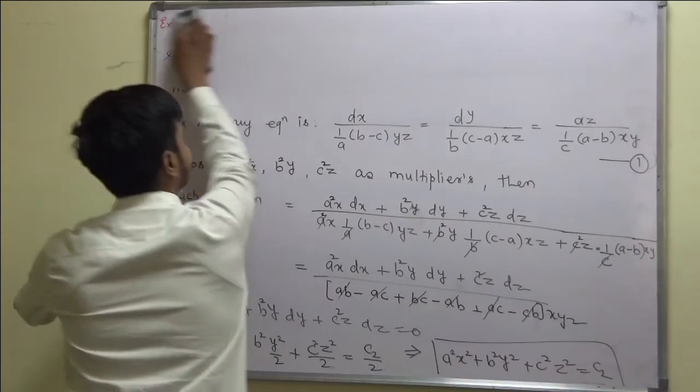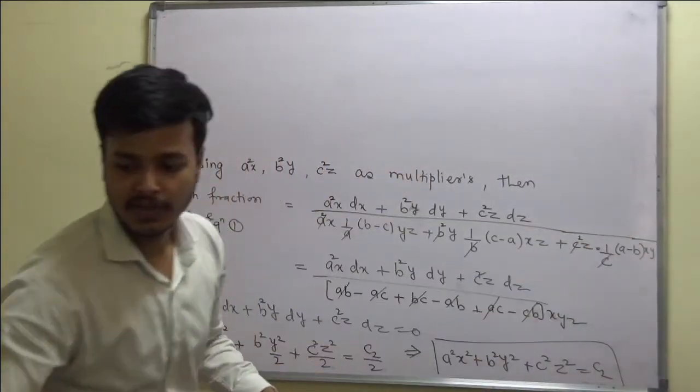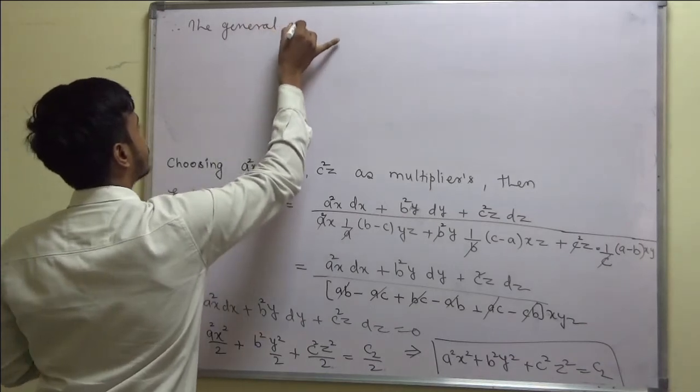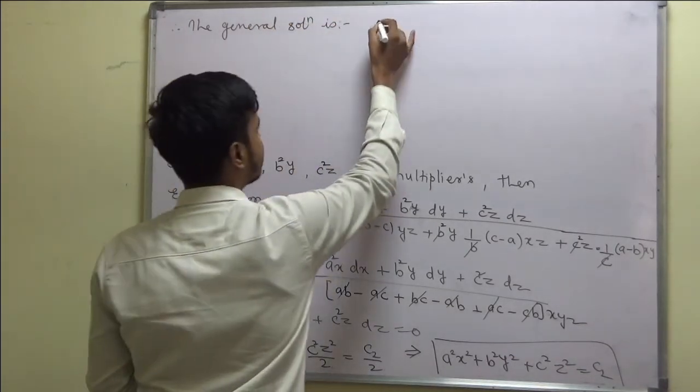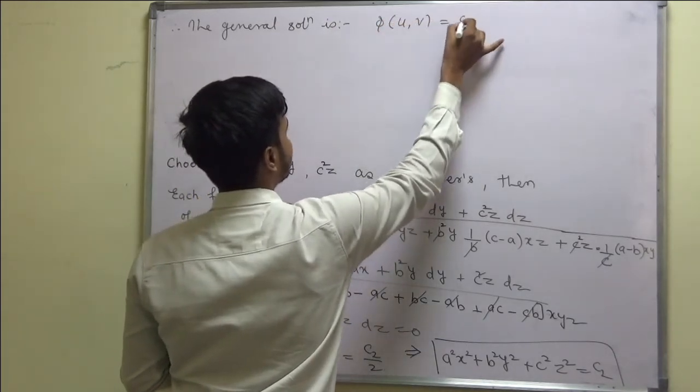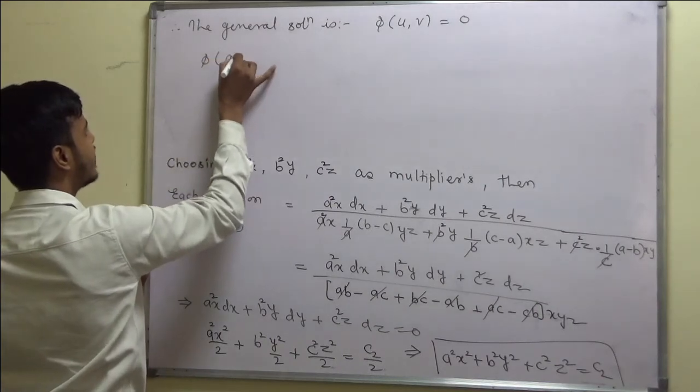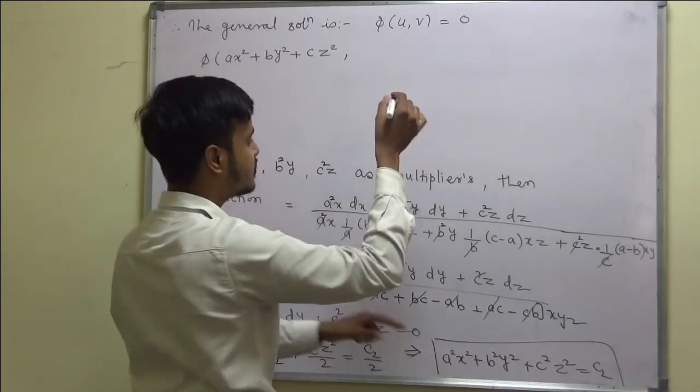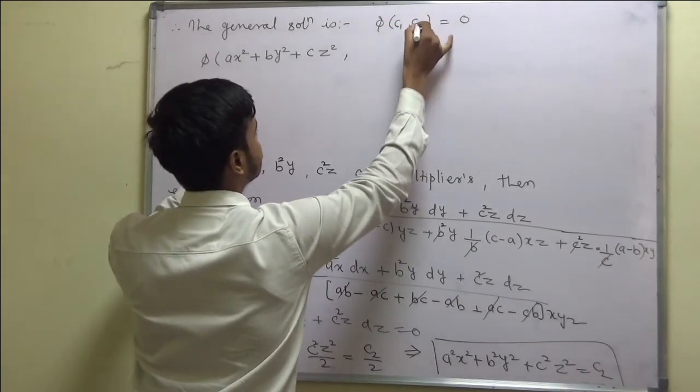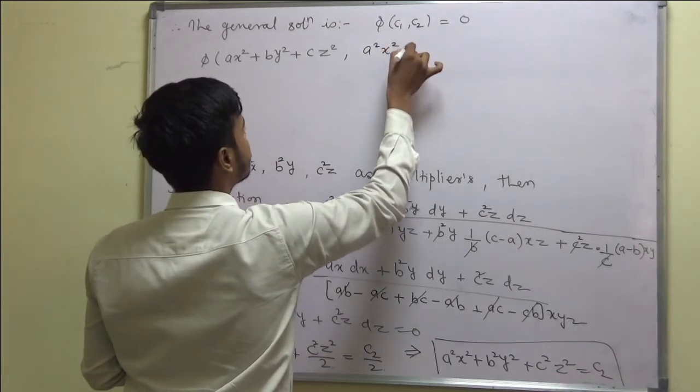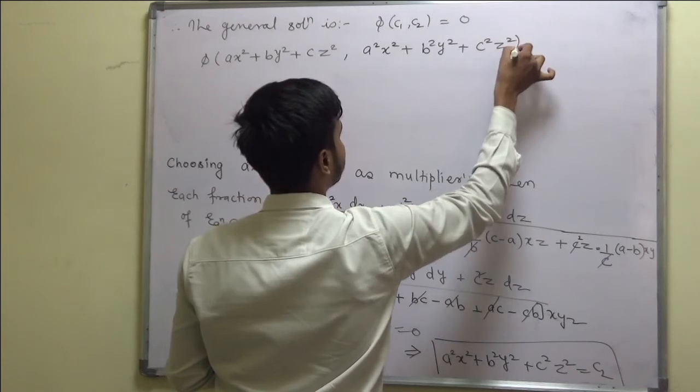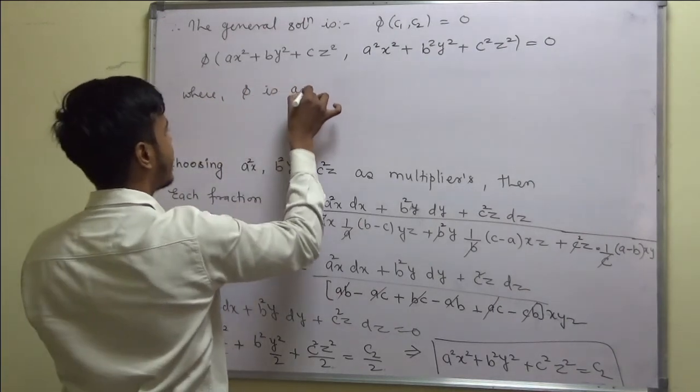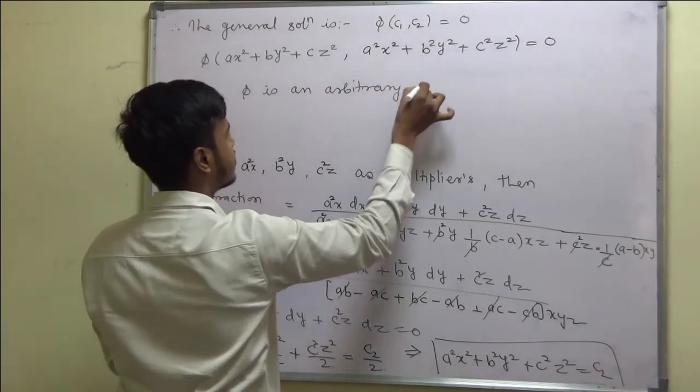Then what are you waiting for? Just write down the final answer. Therefore, the general solution is φ(u,v) = 0. So φ of what is my u? a·x² plus b·y² plus c·z² and what is my c₂? Second one is a²·x² plus b²·y² plus c²·z² equal to 0. Don't forget to write where φ is an arbitrary function.